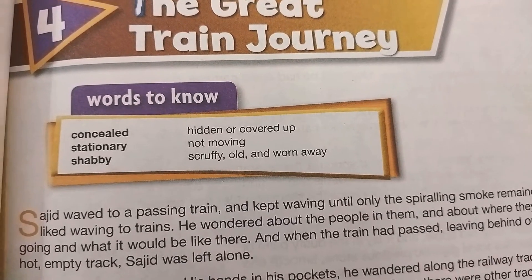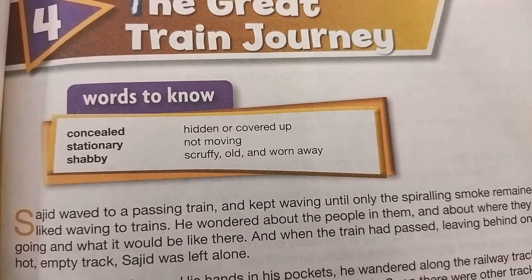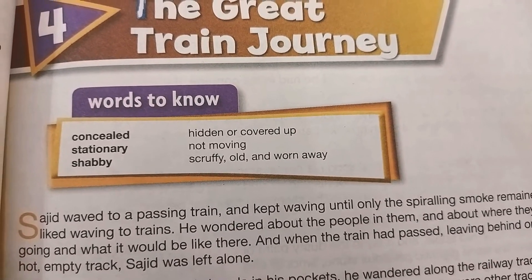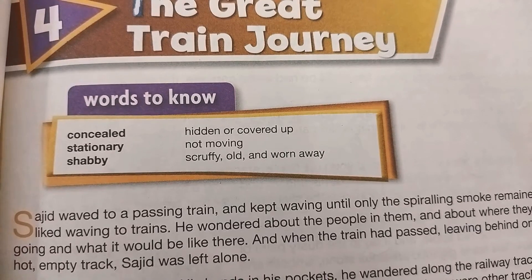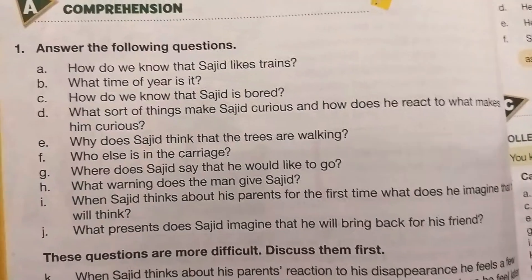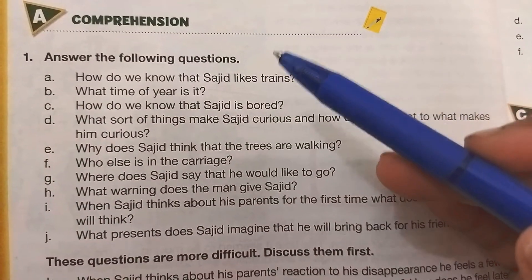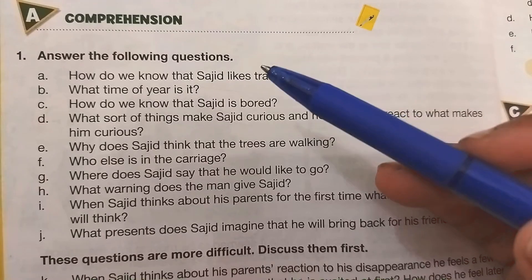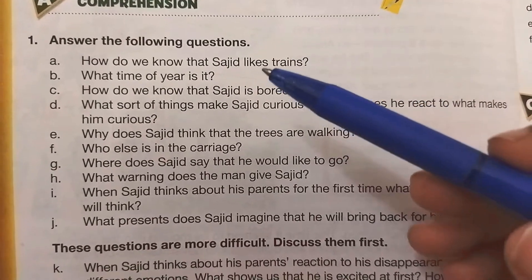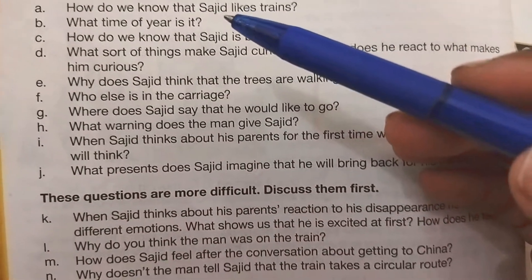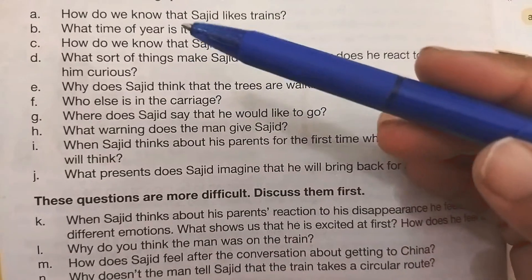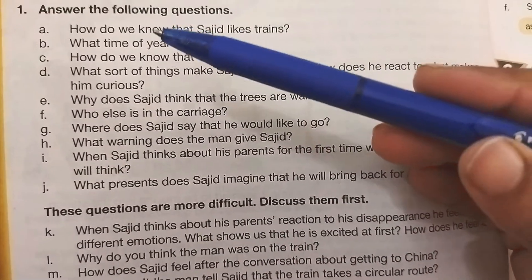So turn over the page and open the question and answer section so that we would be able to deal with them. This is exercise A of comprehension on page number 44 of your textbook and there are two sections of this exercise question number A.